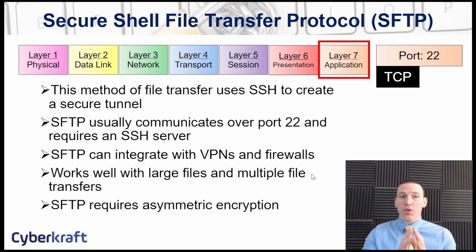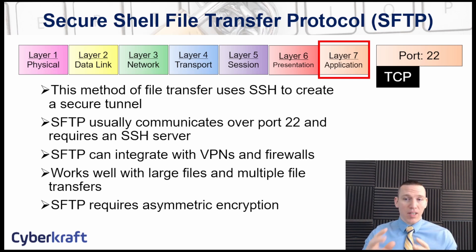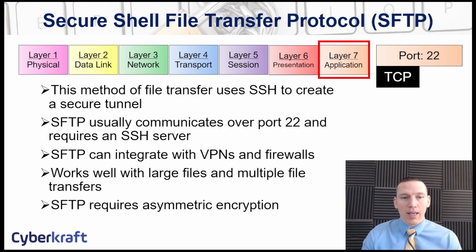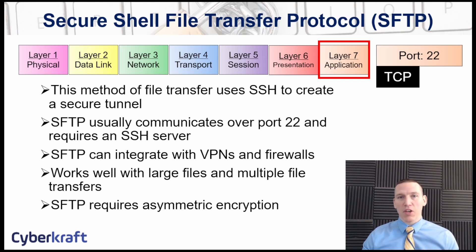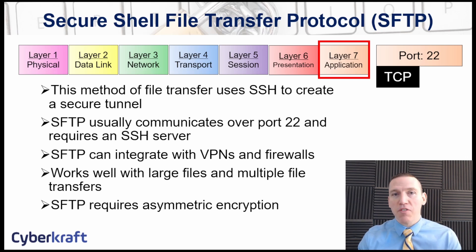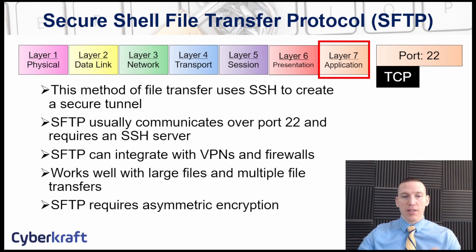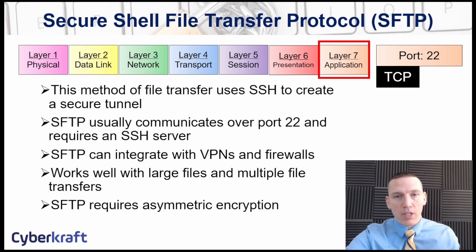Along with SSH, we also have SSH File Transfer Protocol, or Secure Shell File Transfer Protocol — SFTP. This is different from FTP and different from FTPS. It uses SSH to create a secure tunnel, communicating over port 22 and requiring an SSH server. SFTP requires advanced configuration and is not simple to set up, but it integrates very well with virtual private networks, site-to-site VPNs, and firewalls. It's great for multiple and larger files, using asymmetric encryption keys to establish and secure the connection. All these are layer 7 TCP connections.